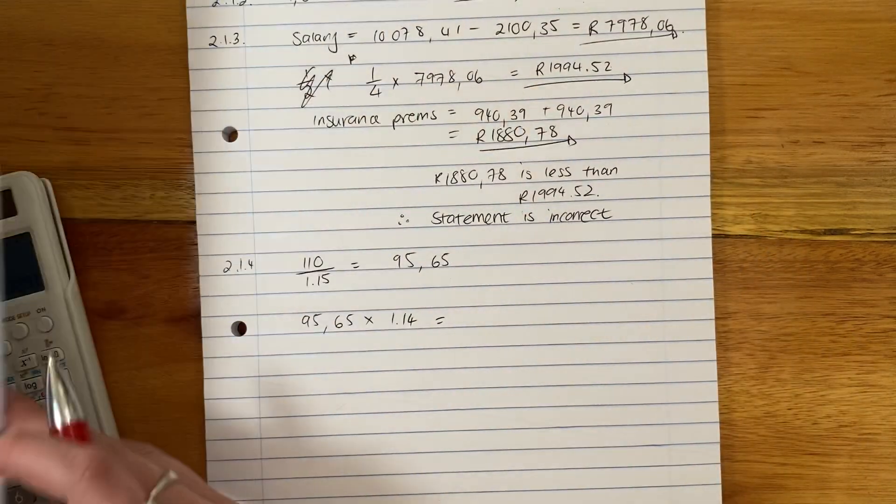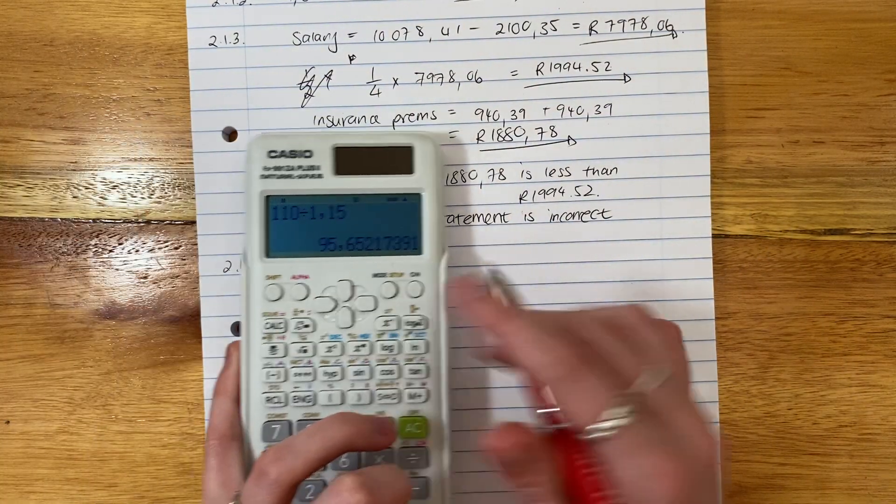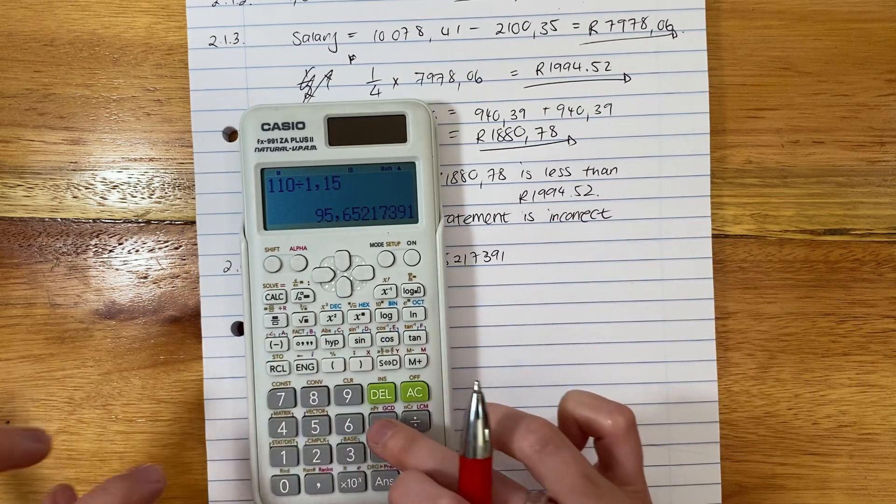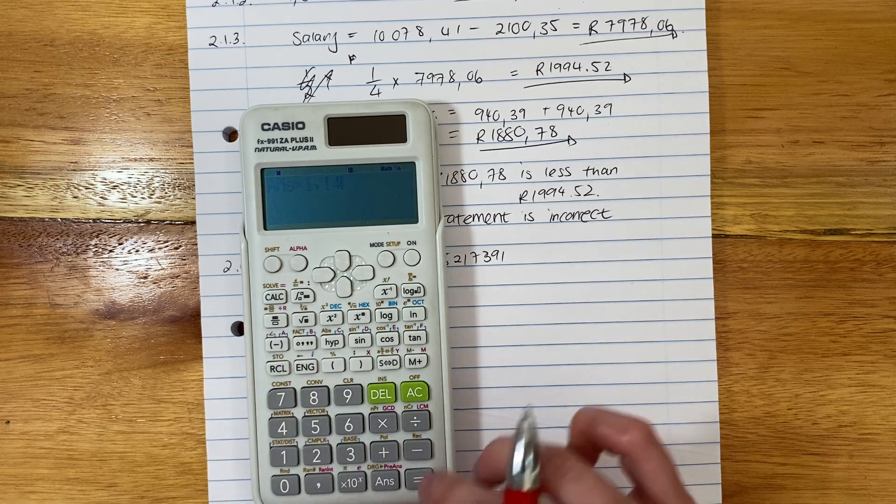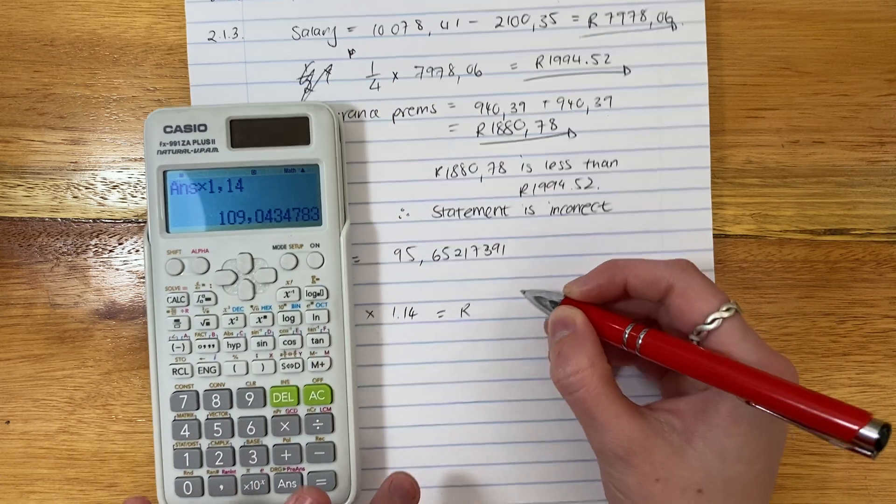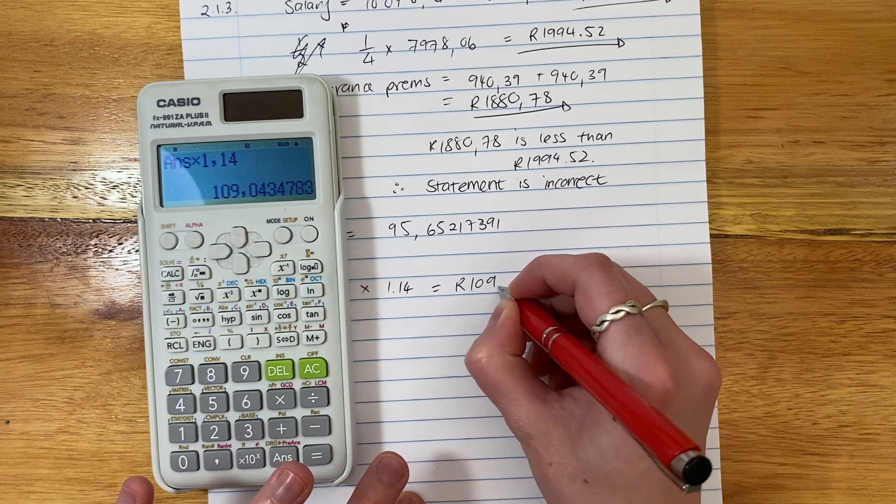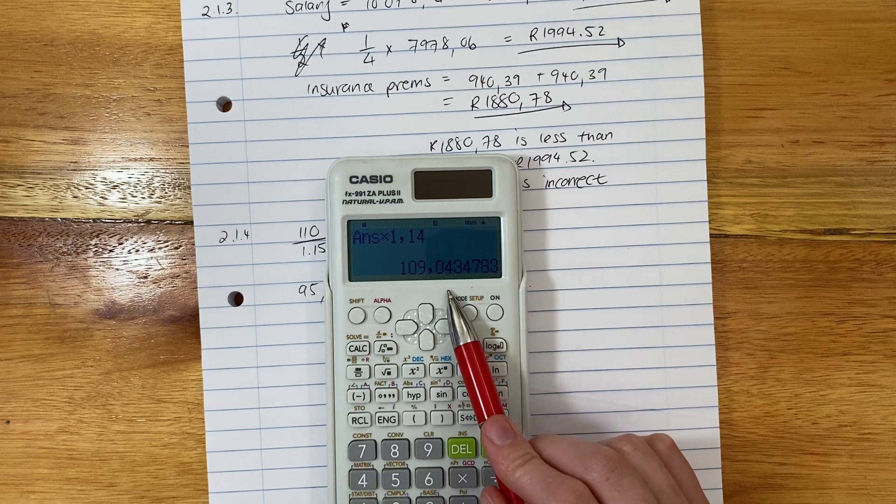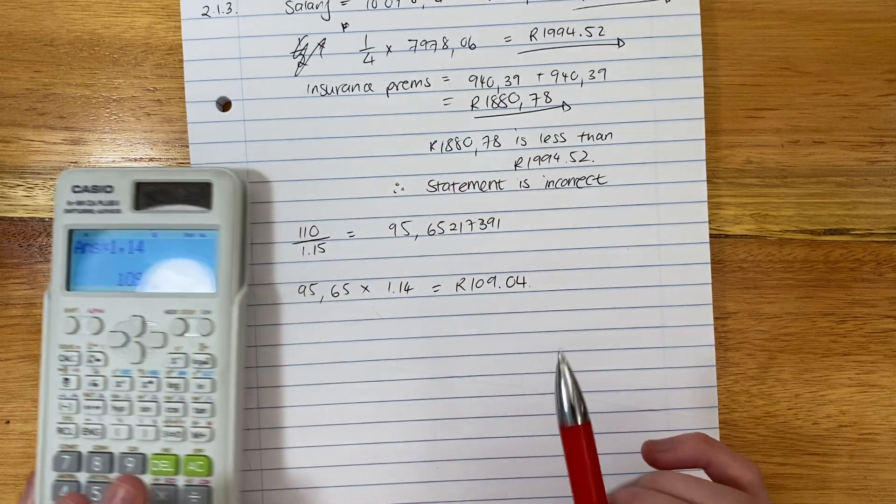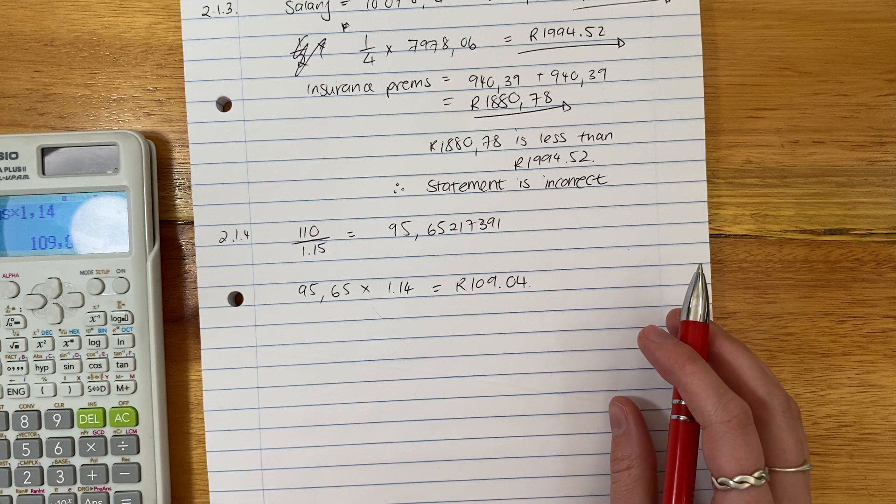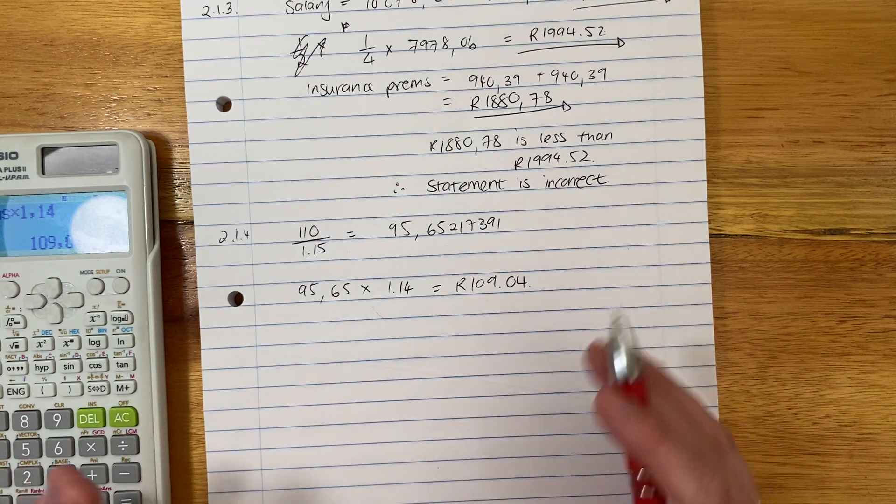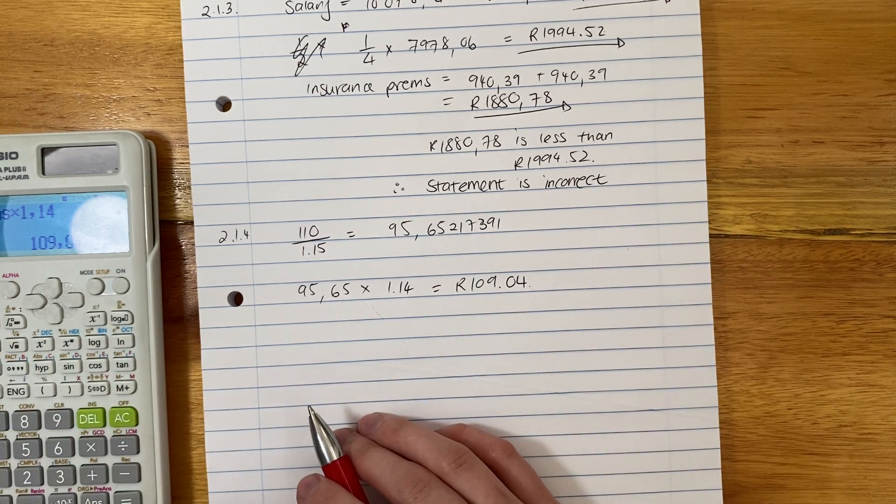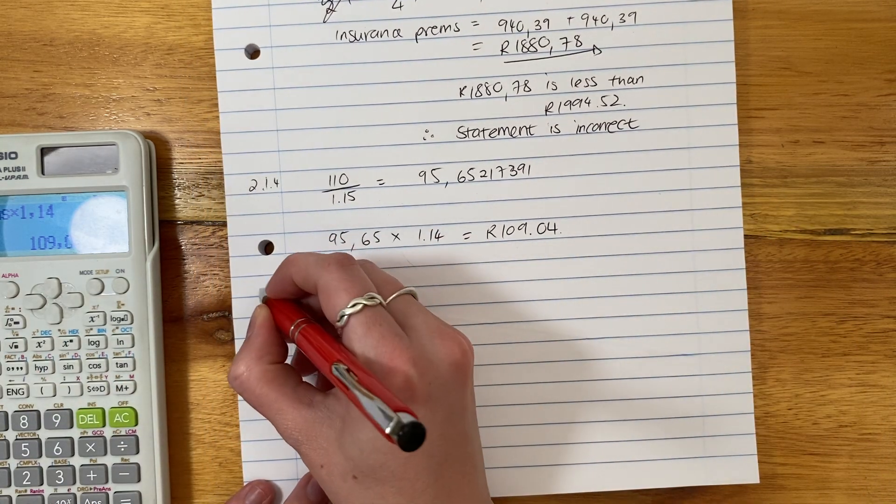So all we're going to do is we're going to take this. So remember, all these decimal places you're going to keep. You can even write them out here. Because remember, we only round off at the end. So then we're going to times this by 1.14. And my price in 2017 of that service fee would have been this. Remember, round off to two decimal places. The third decimal is three, so we round down. Be very careful here. All they're wanting you to do is show that you know that the VAT rate has changed. Remove the VAT of 15%, add the VAT of 14%.